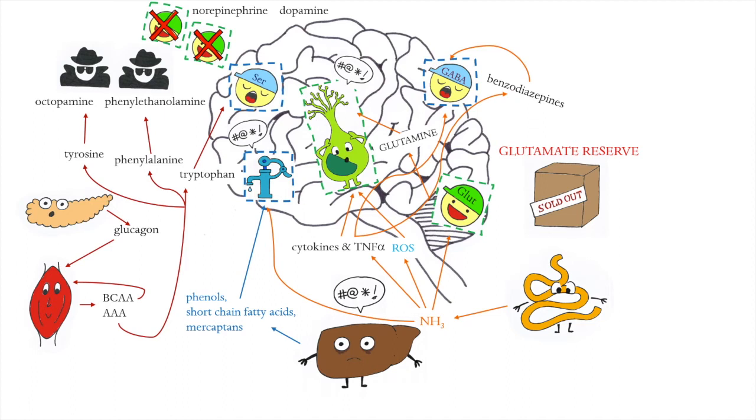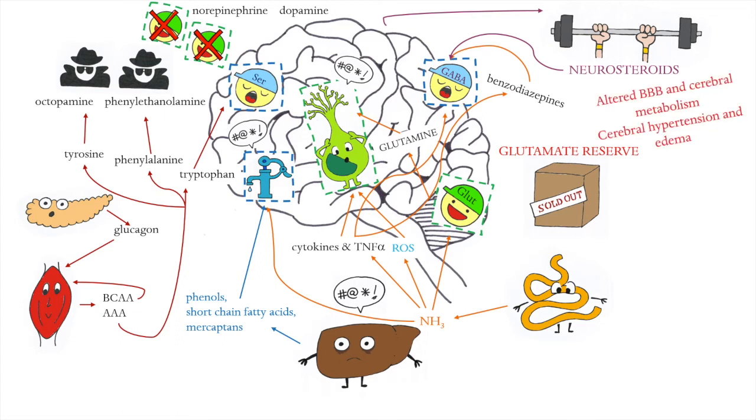As a protective mechanism, the brain produces neurosteroids, but these also enhance the activity of GABA. Moreover, there can also be alteration of the blood-brain barrier and of cerebral metabolism, with cerebral hypertension and edema.